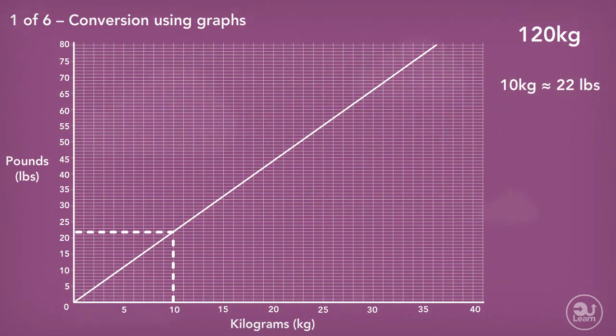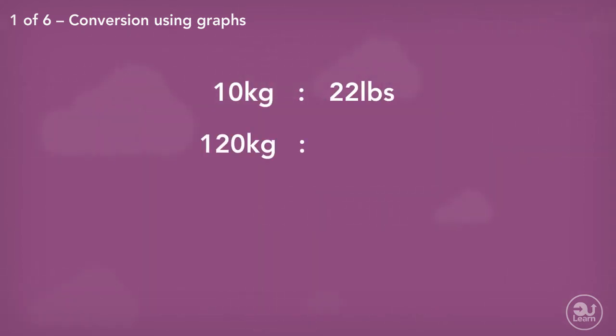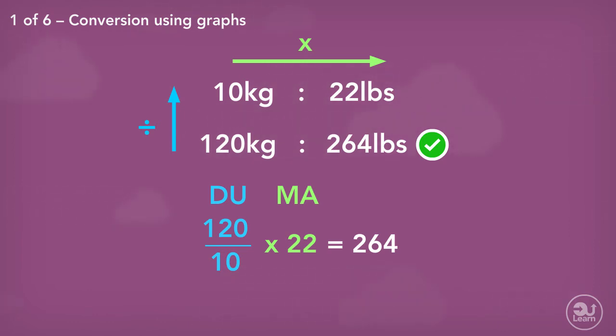We can now use Duma to find what 120 kilograms is as pounds. We arrange our information, then divide up and multiply across. 120 divided by 10 times by 22 equals 264. Therefore, 120 kilograms is still approximately equal to 264 pounds.